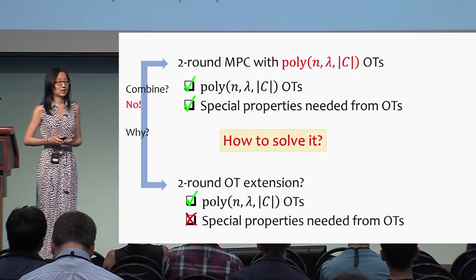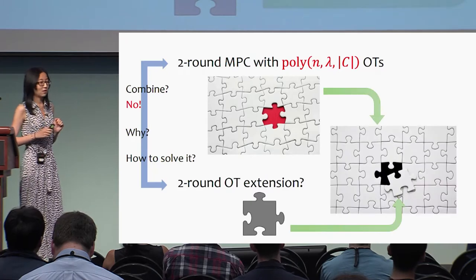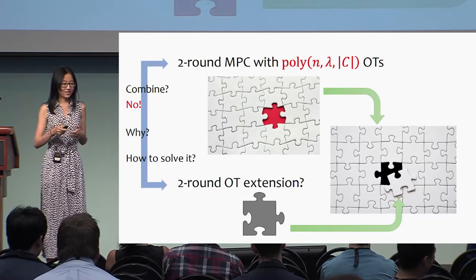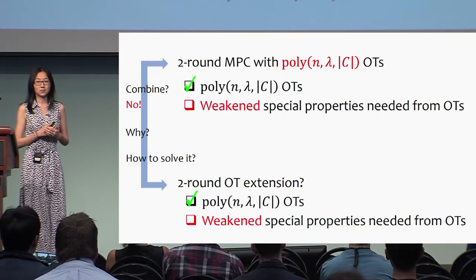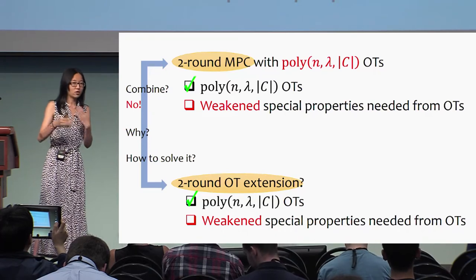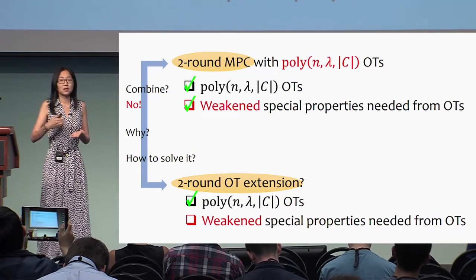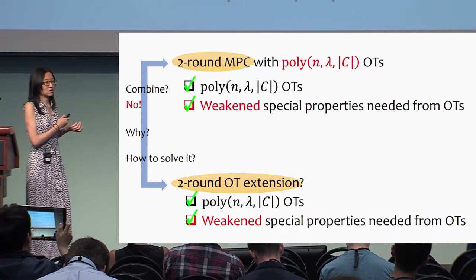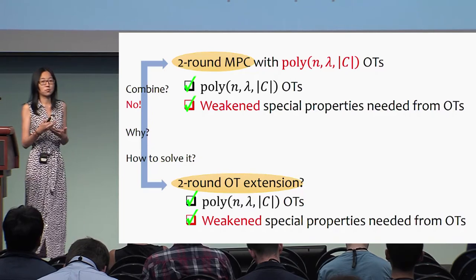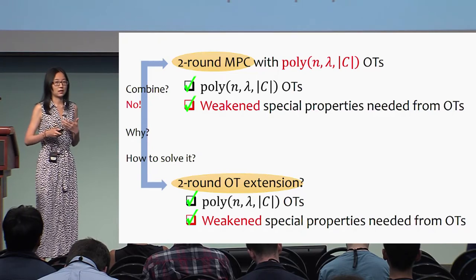How can we solve it? At a very high level, we're going to somehow modify the puzzle and the missing piece so that they can match. More specifically, we're going to weaken the special properties. We'll look deeper into two-round MPC and two-round OT extension and modify them so that first, the weakened properties are sufficient for two-round MPC, and second, two-round OT extension also satisfies these weakened properties.